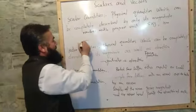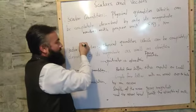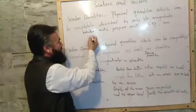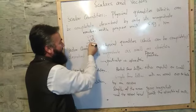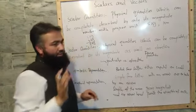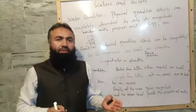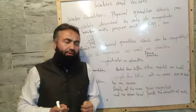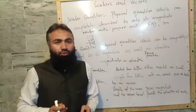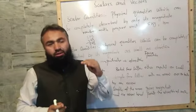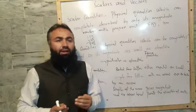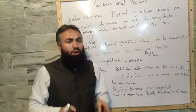For this reason we can add, subtract, and divide scalar quantities by ordinary algebra. For example, if you have 5 kilogram sugar and 3 kilogram sugar, we can add them by ordinary algebra — it becomes 8 kilogram. Another example: 10 meter and 5 meter, we add them by ordinary algebra to get 15 meter. So mass, distance, density, and volume are all scalar quantities because they do not require any direction.